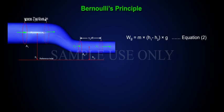WG is equal to M into H1 minus H2 into G, equation 2.